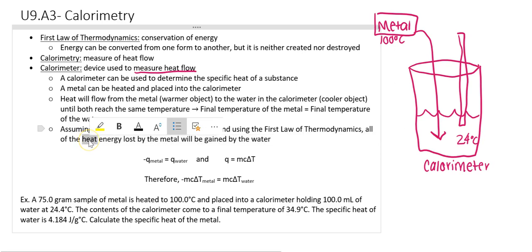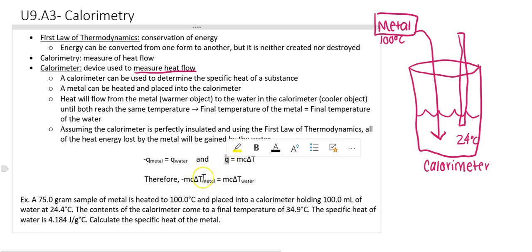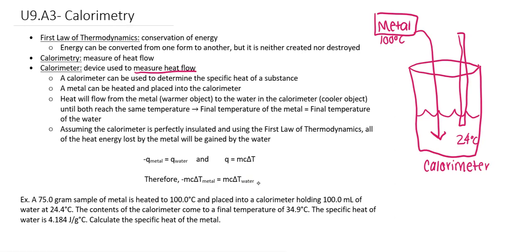The variable we use to represent heat is q. So the energy lost by the metal must be equal to the energy gained by the water. We know that q is equal to mc∆T, so all I have to do is take that equation and plug it in for q. That brings us to the equation: mc∆T of the metal must be equal to mc∆T of the water.